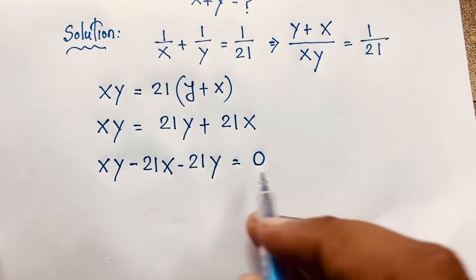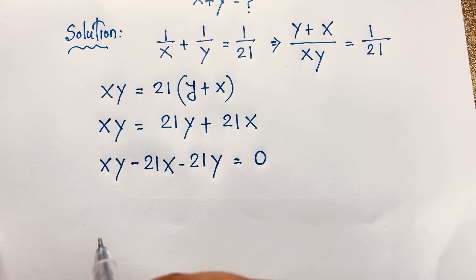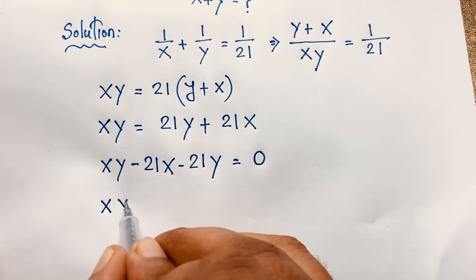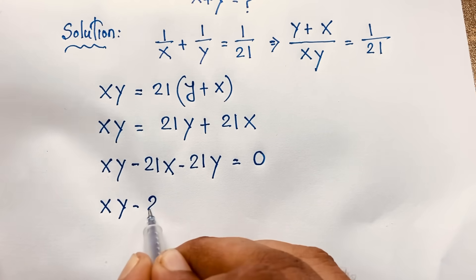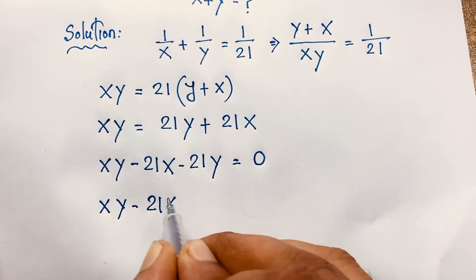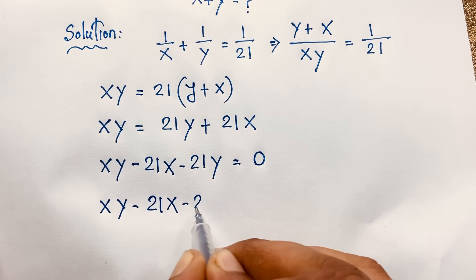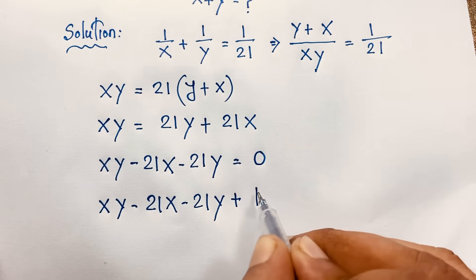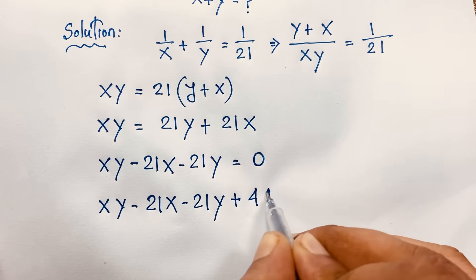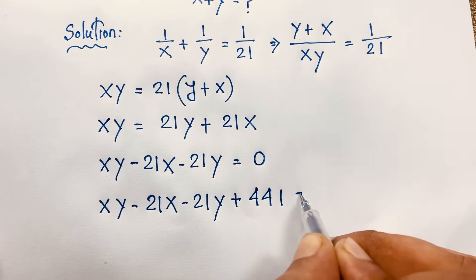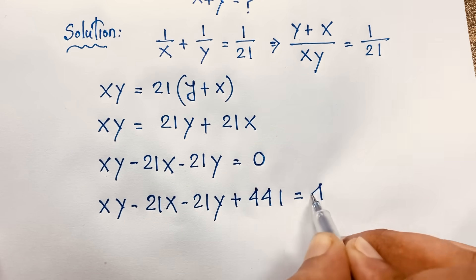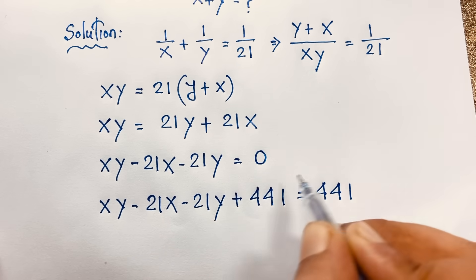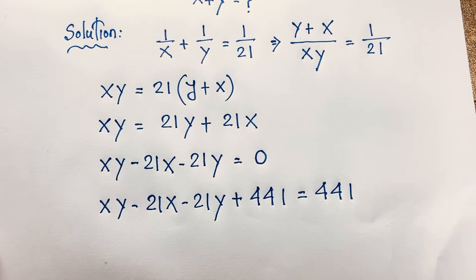So we are finding this expression equals 0. Now, xy minus 21x minus 21y equals 0. I add 441 to both sides, giving xy minus 21x minus 21y plus 441 equals 441.